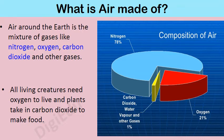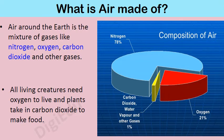The air around the earth is a mixture of gases like nitrogen, oxygen, carbon dioxide, and other gases. Nitrogen forms about 78% of the earth's atmosphere, and oxygen forms about 21%. The remaining 1% is made up of carbon dioxide, water vapor, and other gases. All living creatures need oxygen to live, and plants take in carbon dioxide to make food.